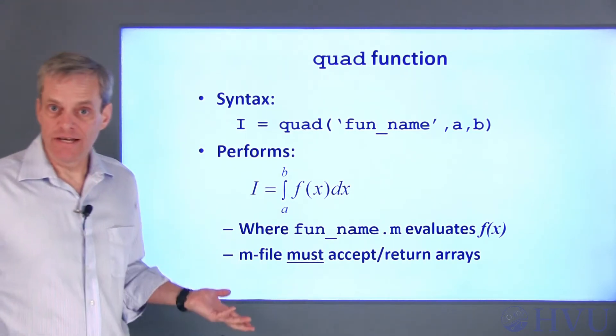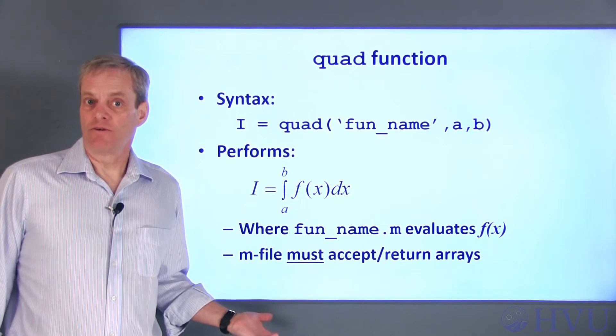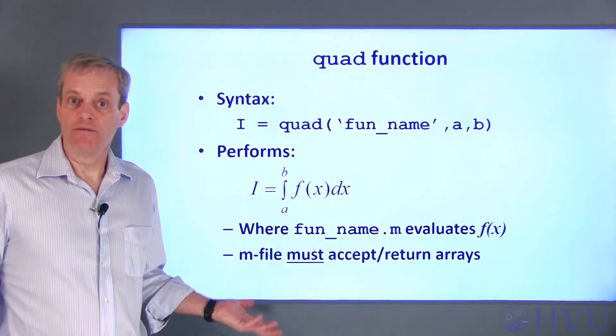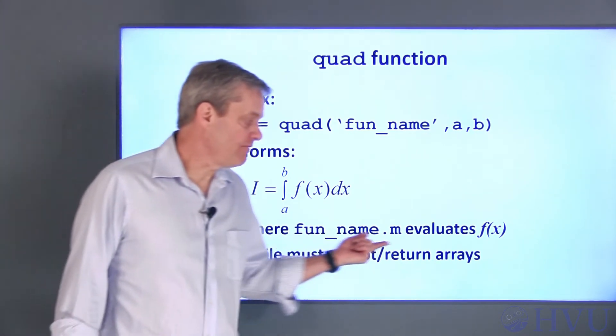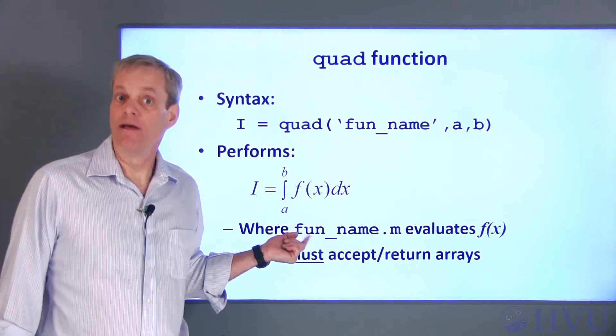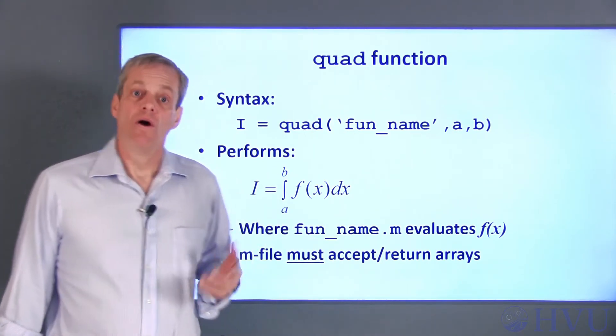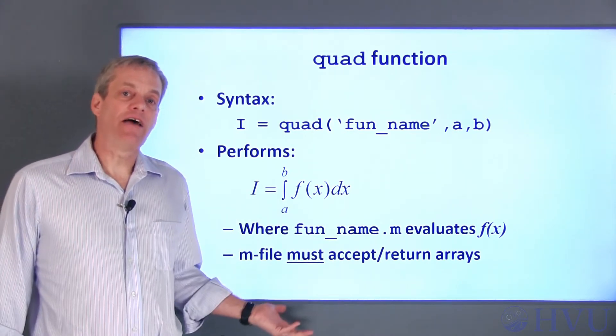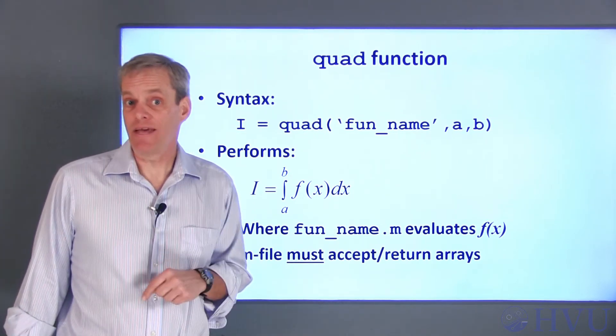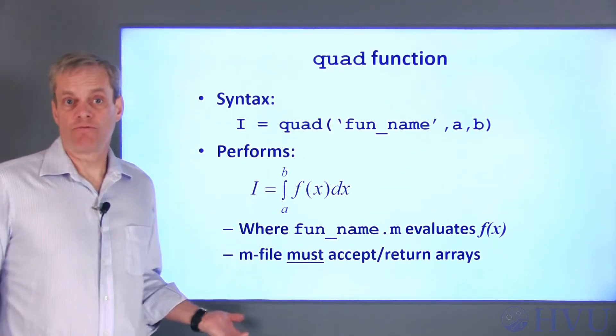When performing the integration, the Quad function first creates an array of x values between a and b using the functions specified in fun_name.m and calculates the integral. Quad then creates another set of x values with a smaller spacing and uses those to perform the same integration.